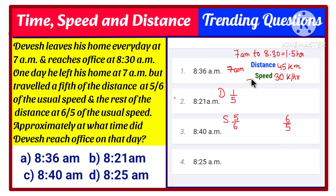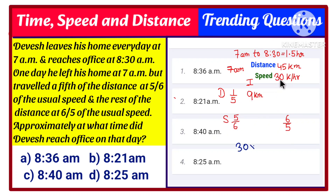In the first case, he traveled one-fifth of the total distance. So 45 × (1/5) = 9 km. The speed in this case is 5/6 of the original speed: 30 × (5/6) = 25 km/h. So in the first case, he traveled 9 km at 25 km/h.